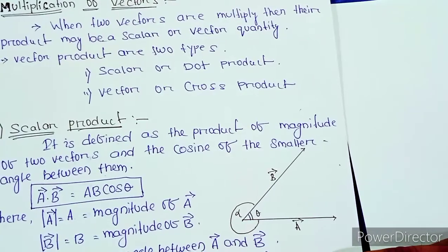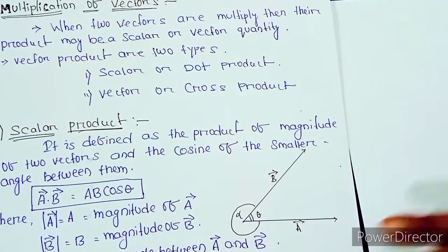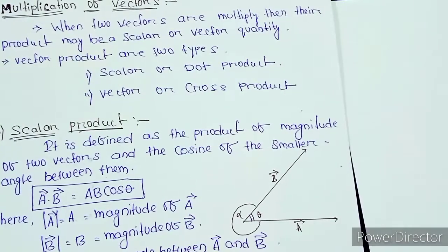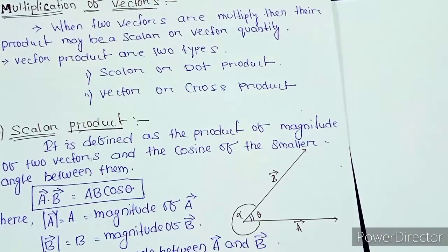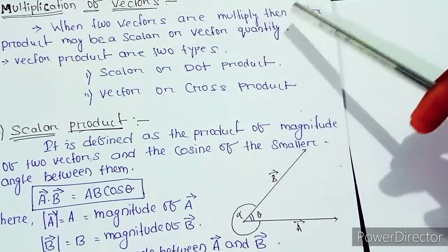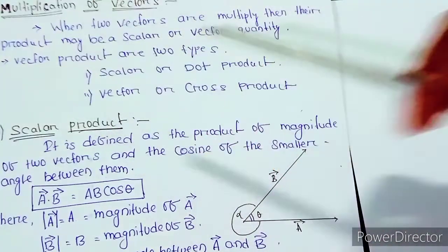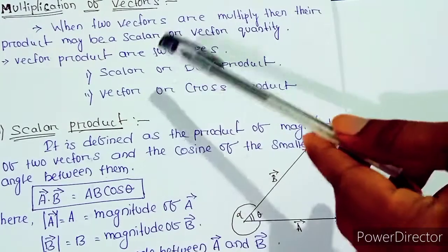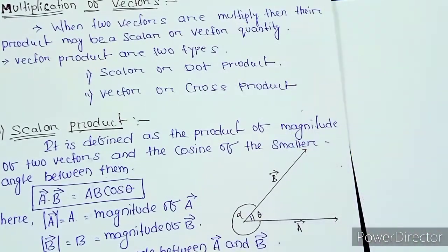Today's topic is the last part of vectors — specifically, the product of vectors. When two vectors are multiplied, their product may be a scalar quantity or a vector quantity.